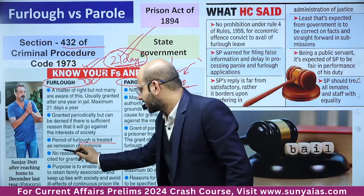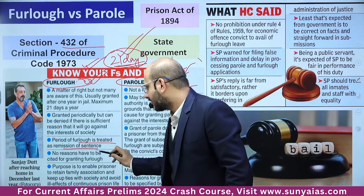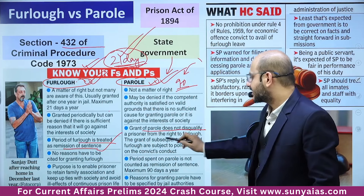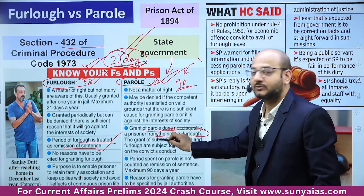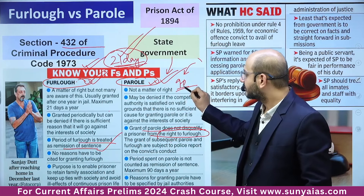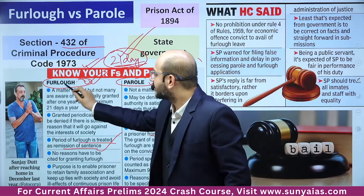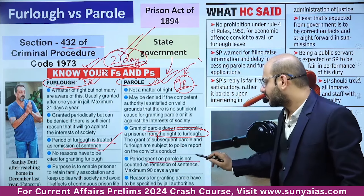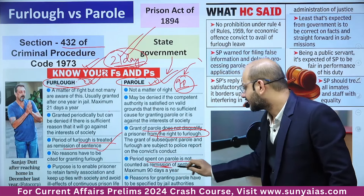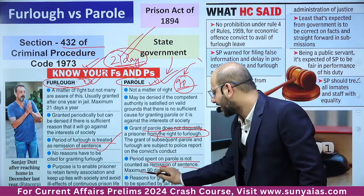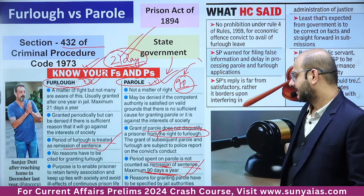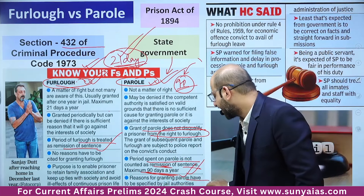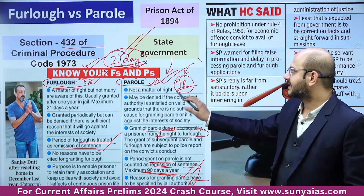The period of furlough is treated as remission of sentence. Importantly, grant of parole does not disqualify a prisoner from the right of furlough — a prisoner can apply for furlough even after parole. The period spent on parole is not counted as remission of sentence, and a maximum of 90 days of parole in a year can be granted. Reasons for granting parole must be specified by the jail authorities.